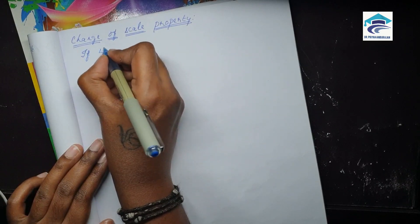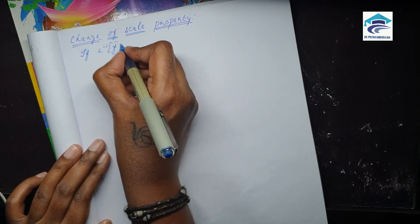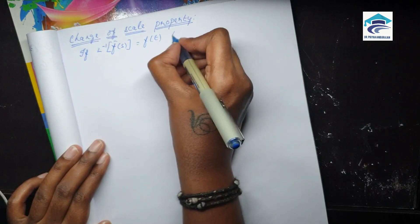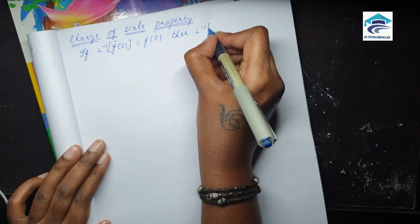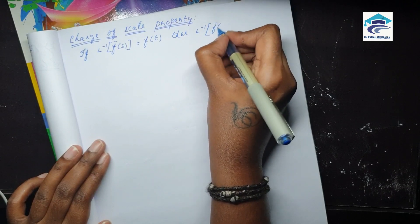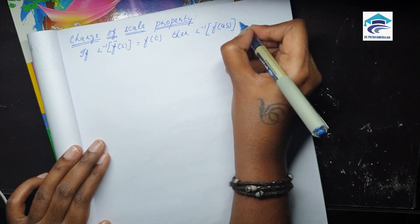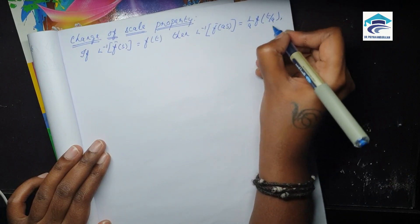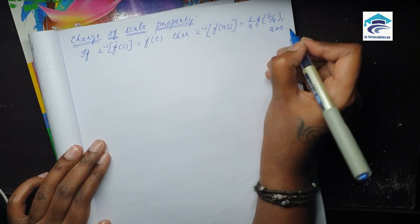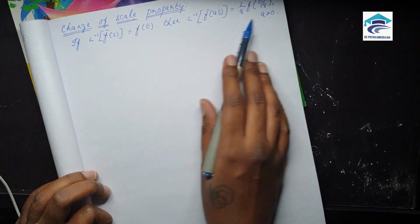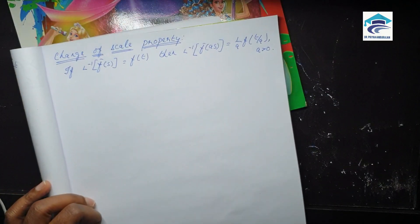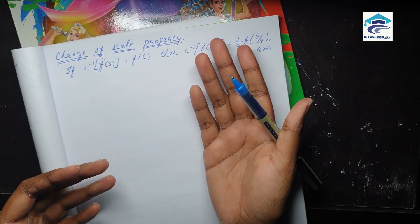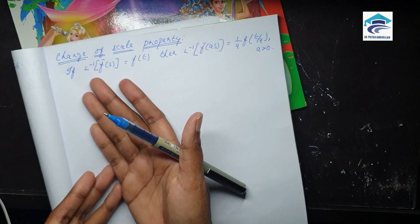Just take the definition. If L inverse of f-bar of s is equal to f of t, then L inverse of f-bar of as is equal to 1 by a times f of t by a, where a is greater than 0. If you have any doubts, just watch the video on how to prove the change of scale property for Laplace transforms — we prove the same and take the inverse here.